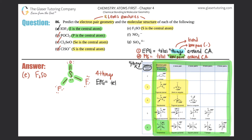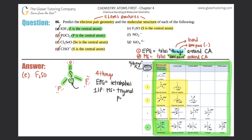Electron pair geometry is tetrahedral. Sulfur has one lone pair, so with four things and one lone pair the molecular structure is trigonal pyramidal. That's part e done.